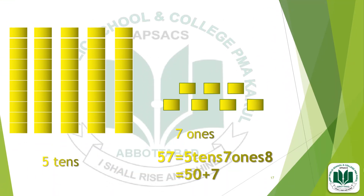Now in this example, how many tens are there? 1, 2, 3, 4, 5. There are 5 tens. And how many ones are there? 1, 2, 3, 4, 5, 6, 7. There are 7 ones. So the number becomes 57: 5 tens and 7 ones. It becomes 57, and 57 equals 50 plus 7.